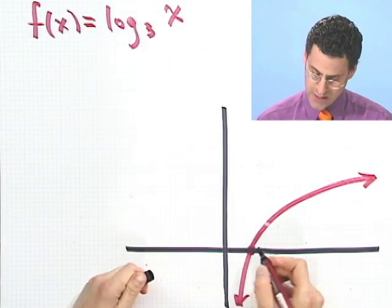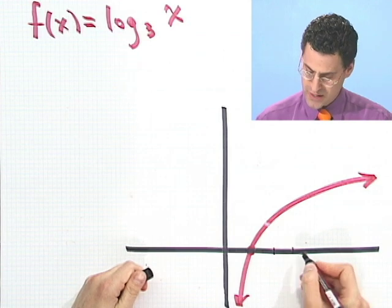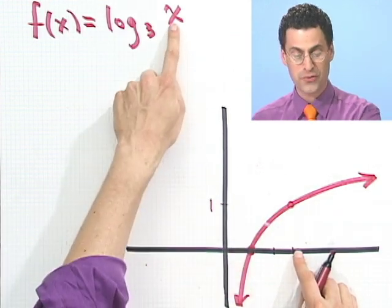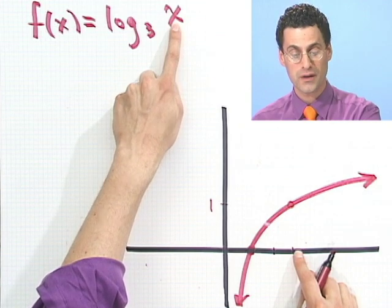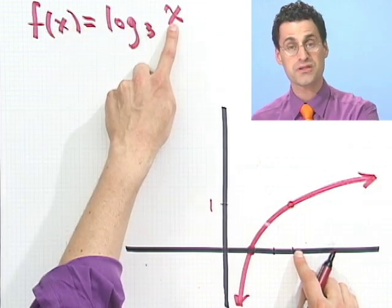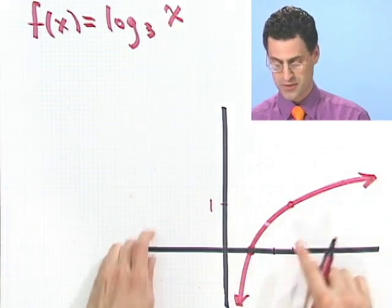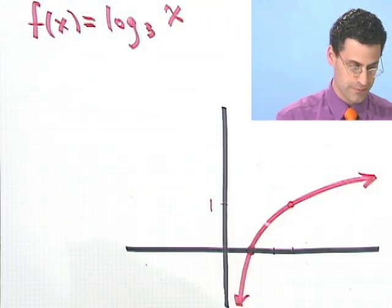If I put in a 1 here, 3 to what power will give me 1? Well, it's 0. So that's the intercept. And so I'm saying it looks like this. And it's asymptotic to the y-axis. It gets closer and closer to the y-axis. For example, that means that at 3, this height must be the number 1, because I put in 3 here. 3 to what power makes 3? Well, 3 to the first power. So at 3, we have 1.